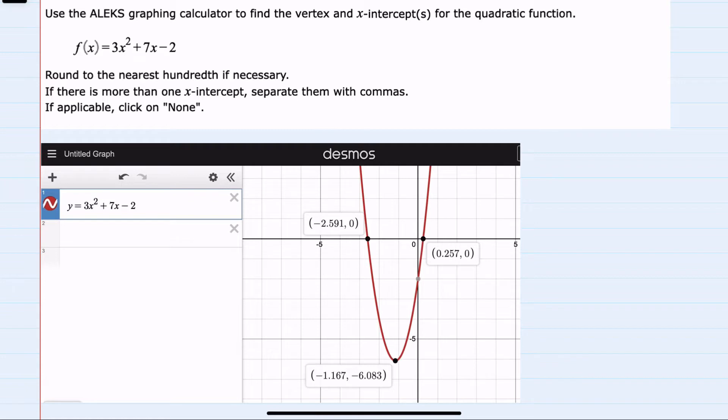So starting with the vertex, we can see that the vertex is a decimal and we'll need to round to the nearest hundredths. So looking at the hundredths place in both of these decimals, I can say that the vertex is at the point negative 1.1... The 6 here would actually round up to a 7, so negative 1.17 rounding to the hundredths place. And in the second coordinate, the 8 would stay the same since it's followed by a 3, so this would be -6.08. This would be the vertex.